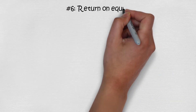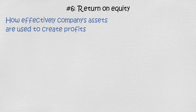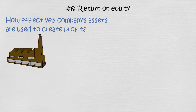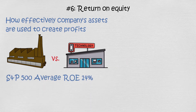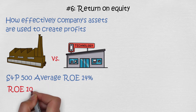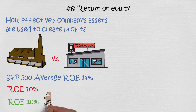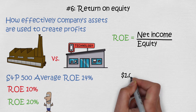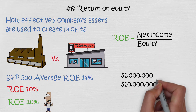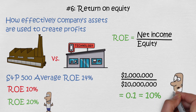Financial ratio number 6: return on equity. Return on equity tells us how effectively a company's assets are used to create profits. You should compare it with other companies — for example, the S&P 500 average long-term return on equity is 14%. A return on equity of 10% is pretty bad; over 20% is very good. The formula is net income divided by equity. If net income is $1 million and equity is $10 million, the return on equity is 0.1, or 10% — below the S&P 500 average.